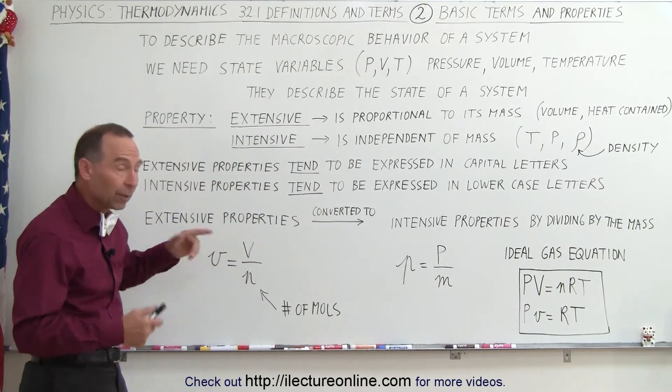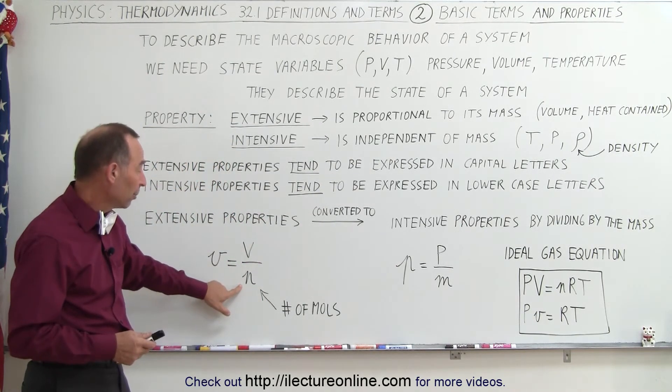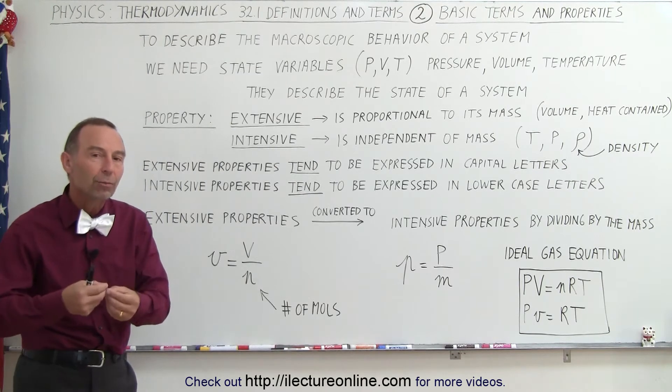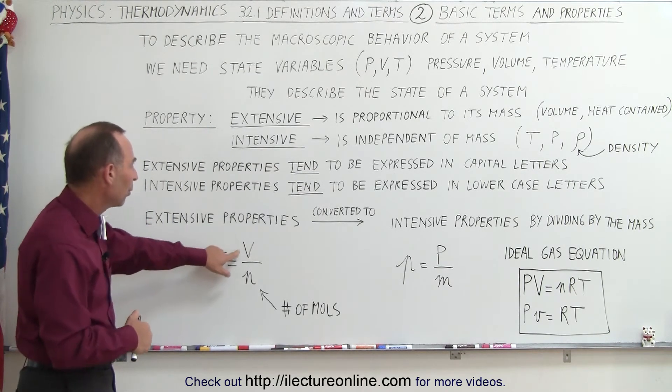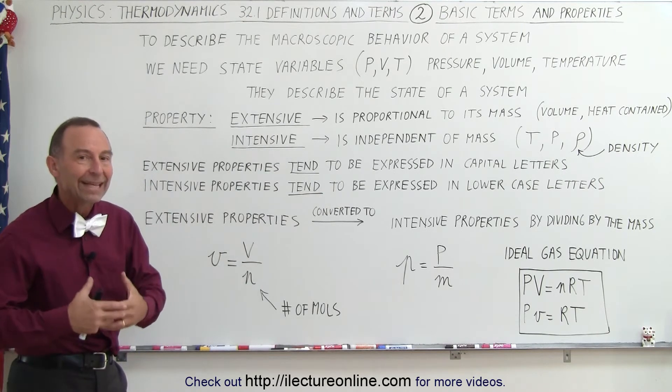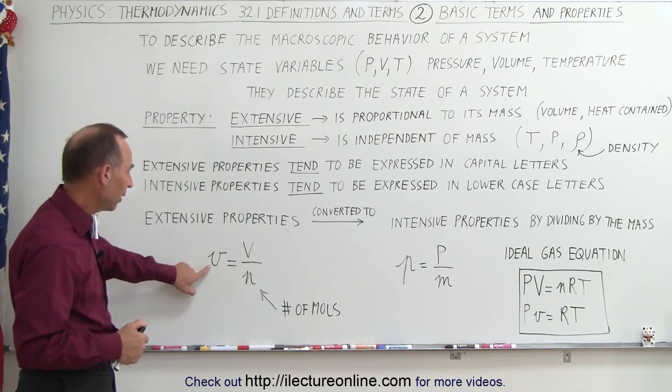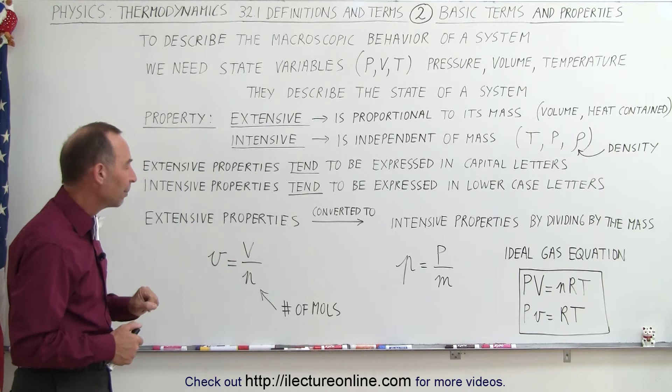What we do is take the volume of an object, divide it by the number of moles, and now we have the volume per mole. So now this becomes an intensive property, whereas the volume of the substance is actually the extensive property, and so we write it with a small v instead of a capital V.